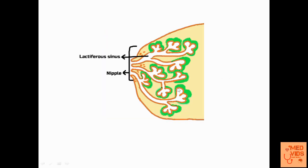In this picture you can see a small dilatation present near the end of the large duct. This will be present in each and every duct, but in this picture I have drawn it in only one particular lobe. This dilatation is called the lactiferous sinus. In lactating women, some amount of milk will be constantly stored in the lactiferous sinus.